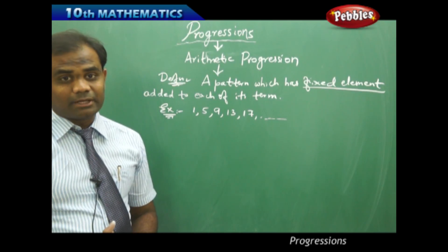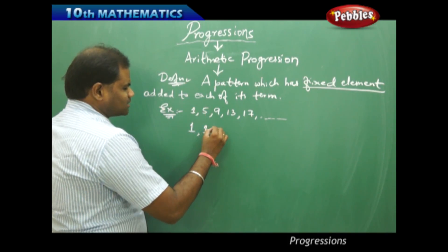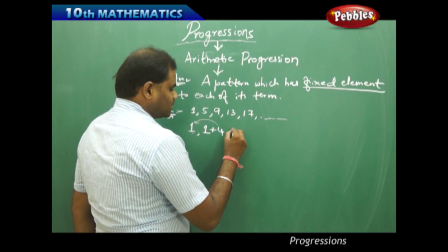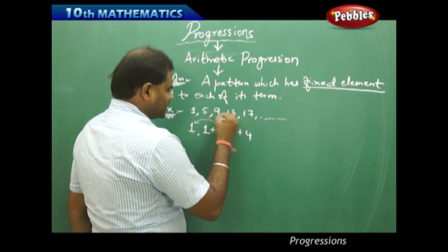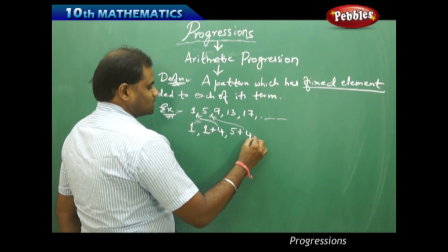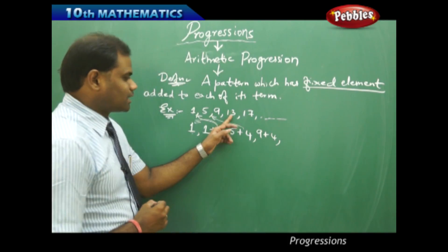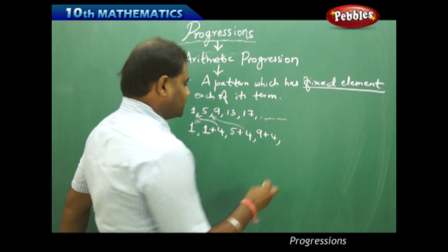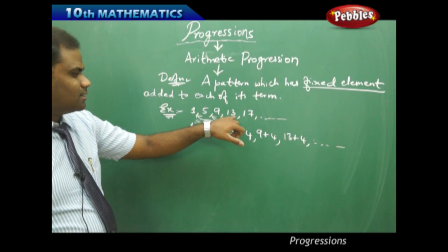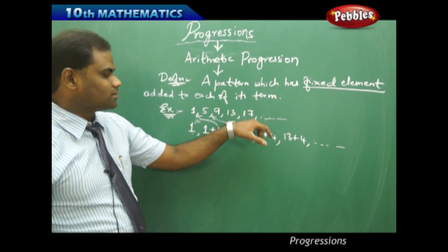As we see here, my first term is 1. The second term is obtained by adding 4 to the previous term. Next, 9 is obtained by adding 4 to the previous term, which is 5. So 5 is written as 1 plus 4, 9 is written as 5 plus 4, 13 as 9 plus 4, and 17 as 13 plus 4.